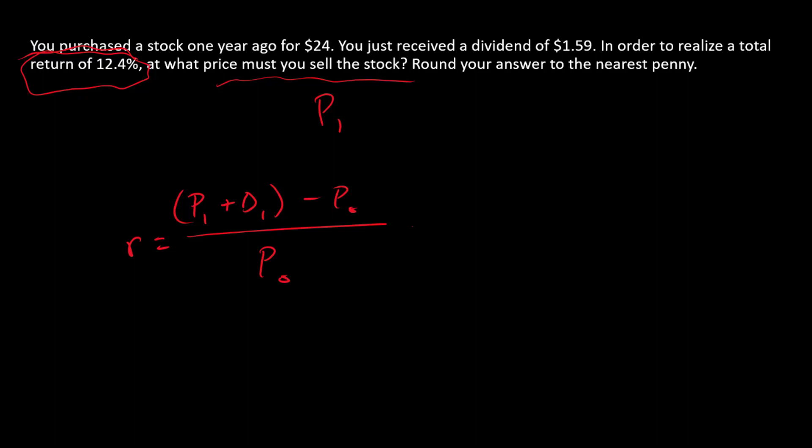And so we can solve for P1 and then insert values and we'll have the answer. Here it just takes a little bit of algebra. I'm going to multiply both sides by P0 first, so I have R times P0 on the left and that's going to equal P1 plus D1 minus P0.